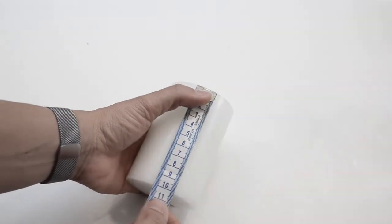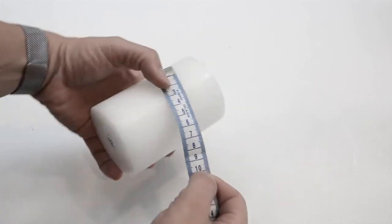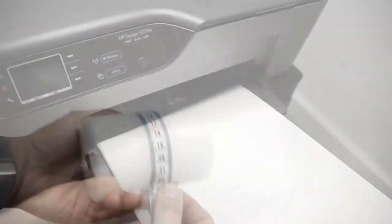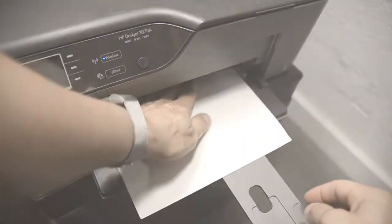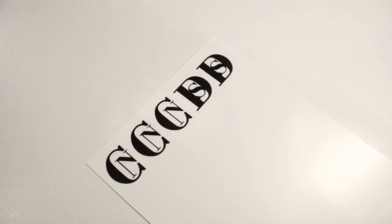First step is to measure your candle and to adjust the design or photo to the correct size. Print out your design onto the waterslide decal paper and leave it for 30 minutes to dry.